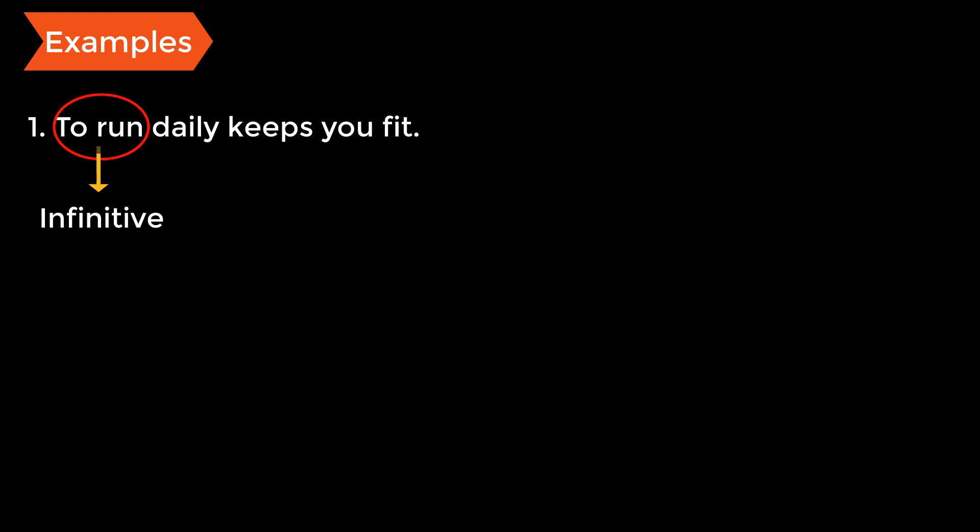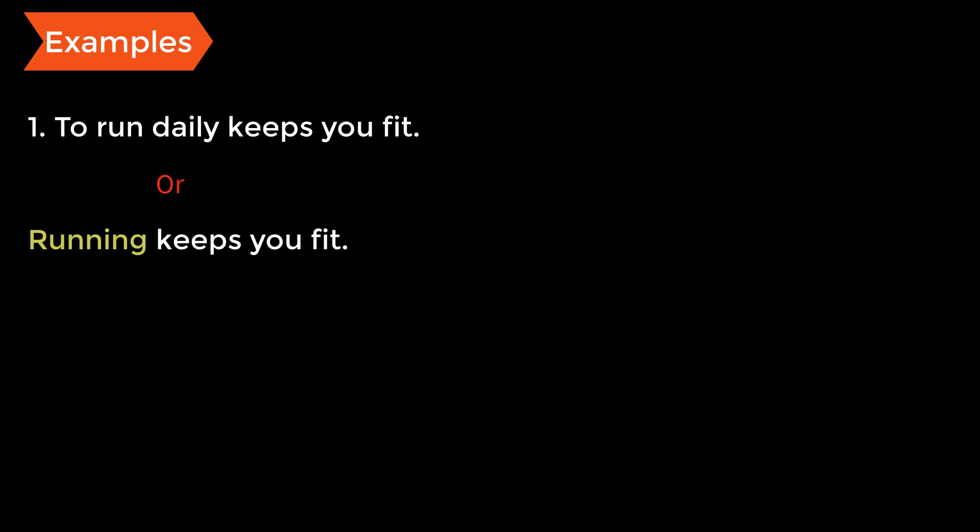Example: 'To run daily keeps you fit.' Here 'to run' is the infinitive. Ask the question — what keeps you fit? 'To run daily.' So 'to run daily' is the infinitive phrase working as the subject of the sentence. It's a very formal construction; you could also say 'running keeps you fit,' using a gerund instead.